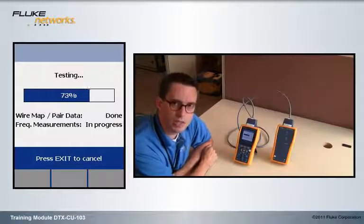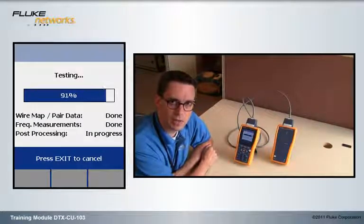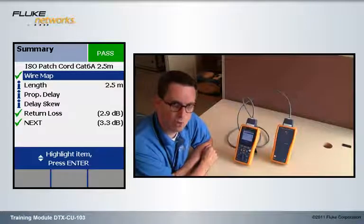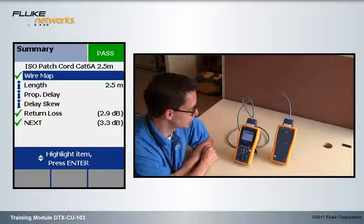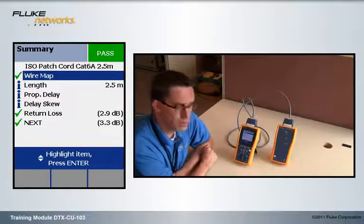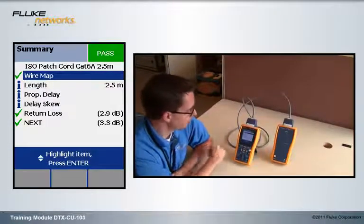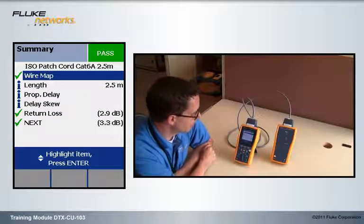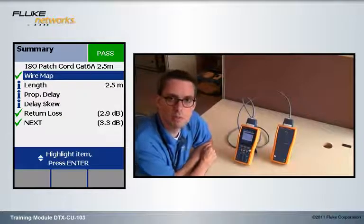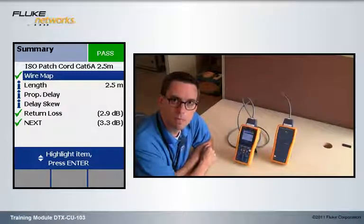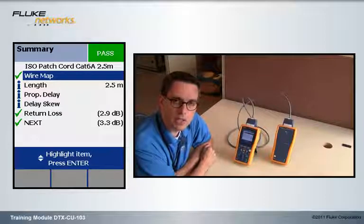The CAT6A test does take a little bit longer than the CAT6 or CAT5E test, because we are running out to 500 MHz. And good news, it passed. Our return loss passed with a margin of 2.9 dB, and our near-end crosstalk passed with a margin of 3.3 dB. We're good to go. And that is how you correctly certify a CAT6A patch cord.